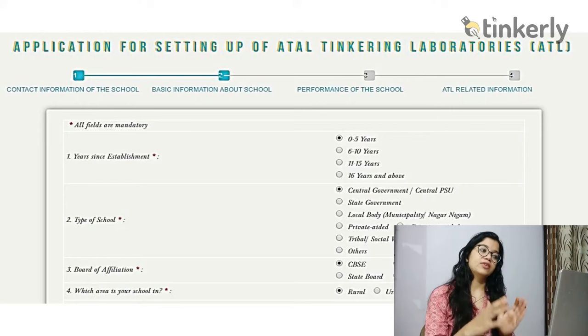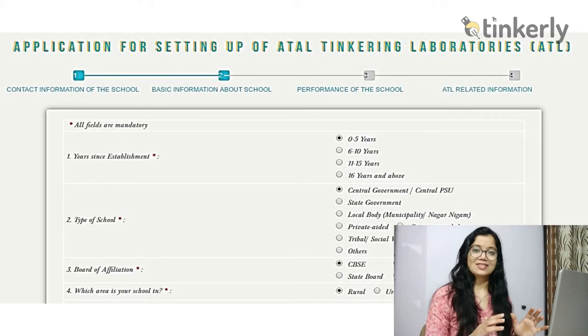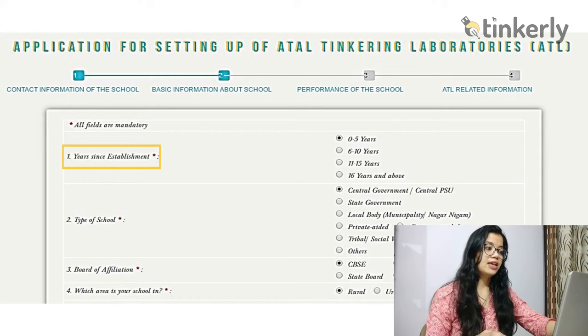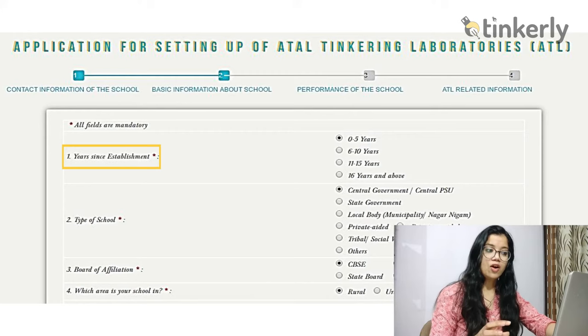Once you click Next, a new page opens for basic information about the school. All fields here are also mandatory. The first question asks for the year of establishment — how old your school is, with options: 0 to 5 years, 6 to 10, 11 to 15, or 16 and above. Select the category your school falls in.